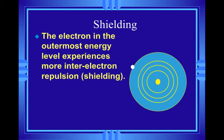Here's an example of shielding. An outer electron out here experiences greater shielding from one, two, three energy levels below it. Then let's say an electron right here would only get shielded by one, so it would not have as much shielding.